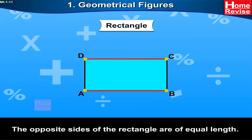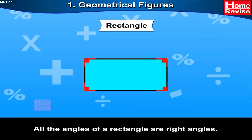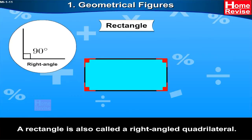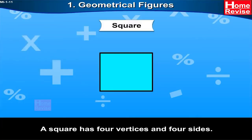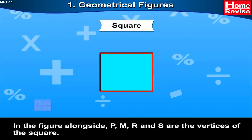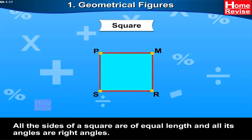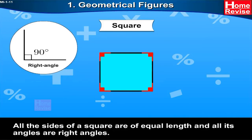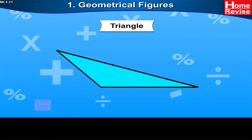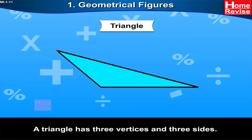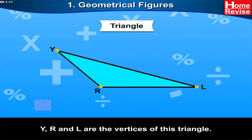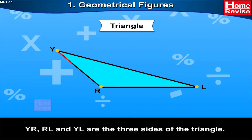The opposite sides of the rectangle are of equal length, and all the angles of a rectangle are right angles. A rectangle is also called a right-angle quadrilateral. A square has four vertices and four sides. In the figure, P, N, R, and S are the vertices of the square. All the sides of a square are of equal length and its angles are right angles. A triangle has three vertices and three sides. The three sides of the triangle are YR, RL, and YL. A triangle has three angles.